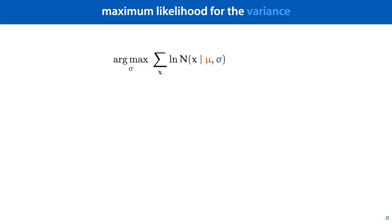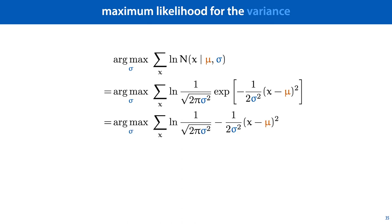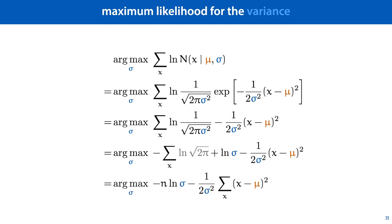We start by filling in the definition of the probability density. Taking the logarithm separates these two factors into two terms as before, and using what we know about the logarithm, we can separate the term on the left into two more terms, one of which doesn't contain sigma, so can be ignored.